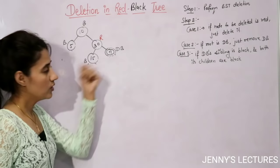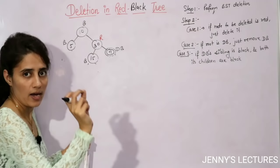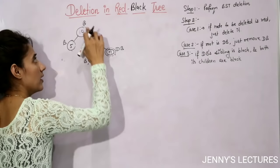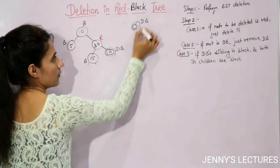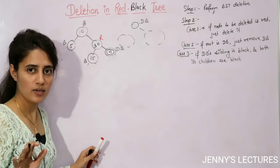The main task in deletion is converting double black into single black. There are multiple cases. The simplest: if the root is double black, simply remove the double black and make it single black.